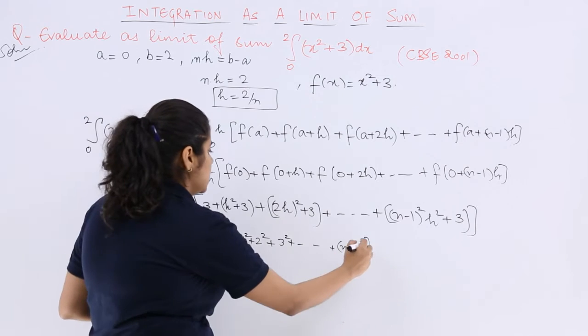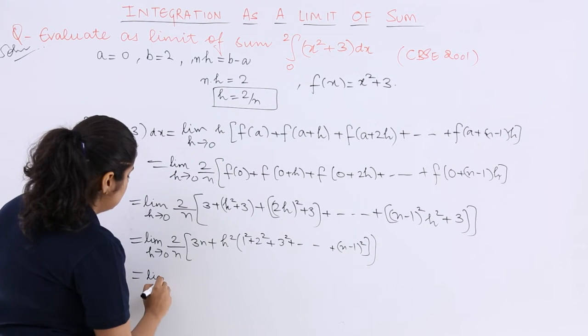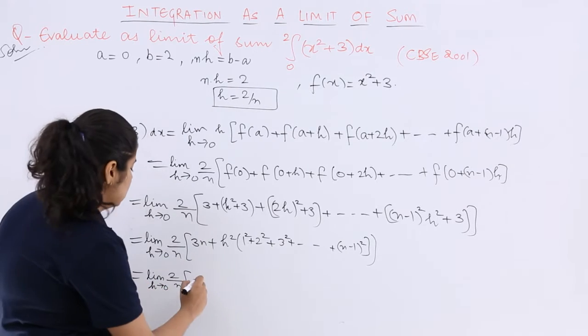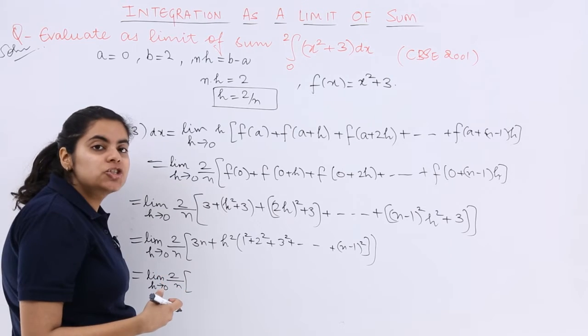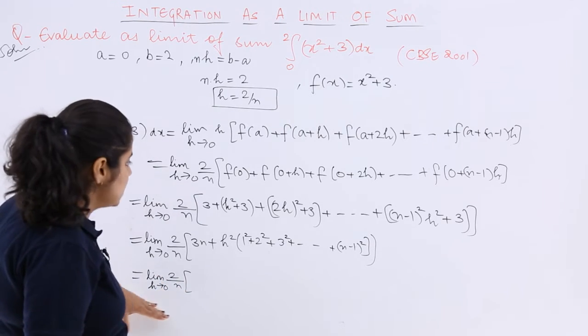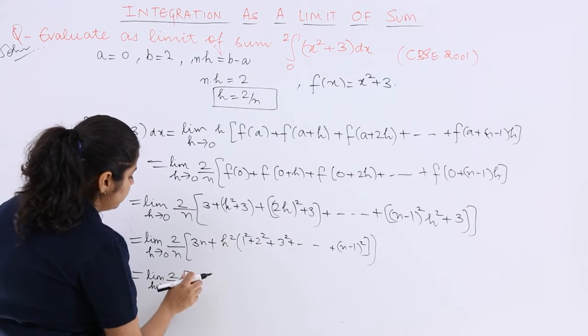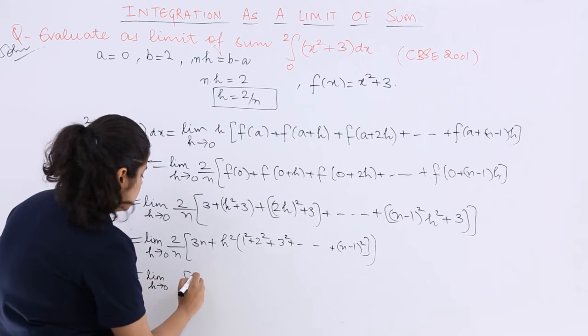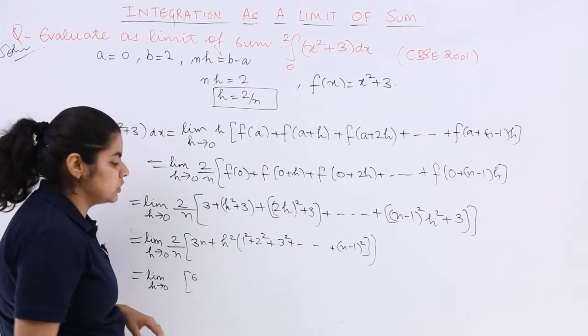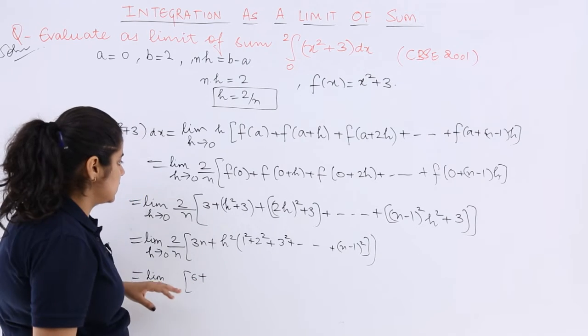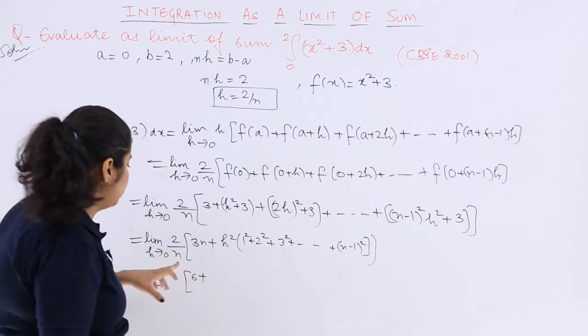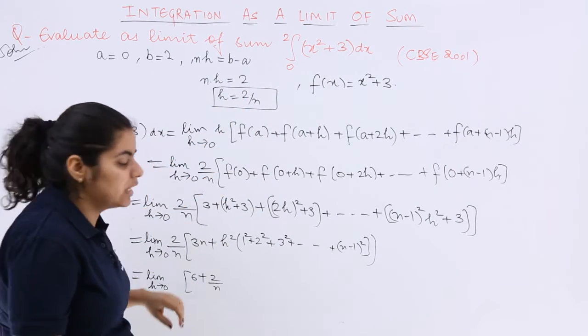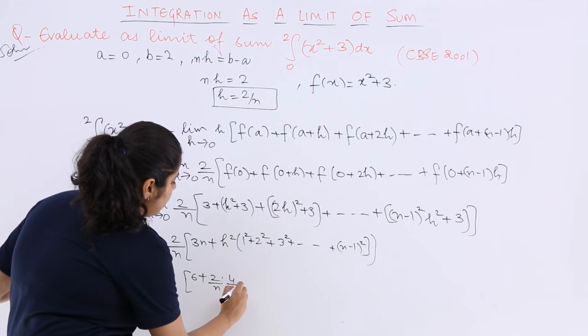I have limit H tends to 0, 2 upon N, 3N is here. Let me introduce certain things. Let me make this very easy to understand by introducing this 2 upon N inside. So it is 3 times 2 which is 6, and N and N getting cancelled. Plus 2 into this thing, so 2 upon N multiplied by H square. What is H? H is 2 upon N. So it is 4 upon N square.